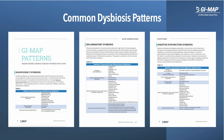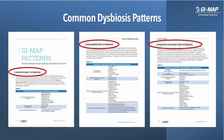The three dysbiosis patterns include: the insufficiency dysbiosis pattern, denoting a lack of commensal and keystone bacteria; the inflammatory dysbiosis pattern, reflecting an increase in inflammatory microbes; and the digestive dysfunction dysbiosis pattern, in which various normal and opportunistic microbes are elevated, typically reflecting digestive issues such as hypochlorhydria, pancreatic insufficiency, and small intestinal dysfunction.